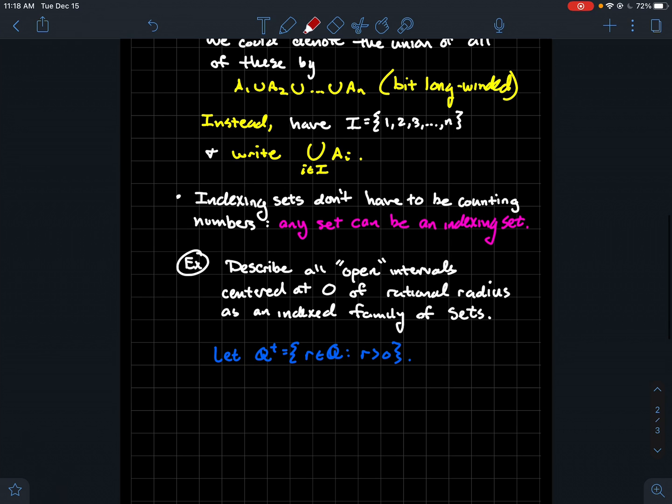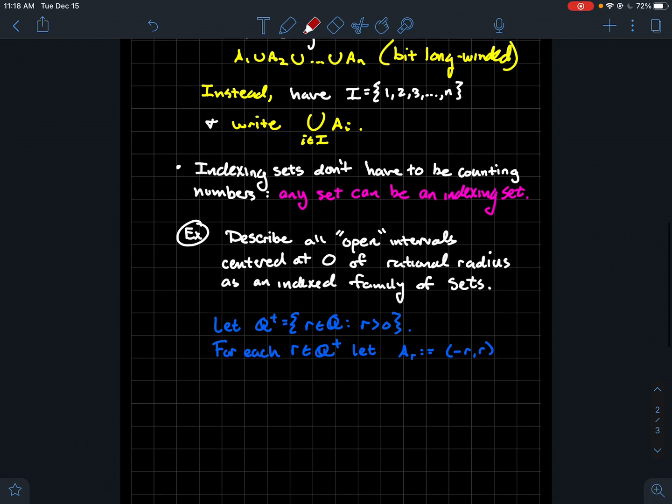So what we're going to do is, I want rational radius. Radius suggests it's a positive number. So I'm going to say Q+, sometimes referred to as the set of all positive rational numbers. Now for each positive rational number, let's define the set A_r to be the following.